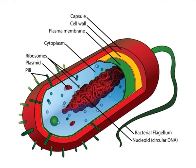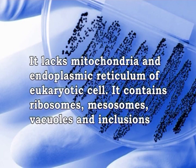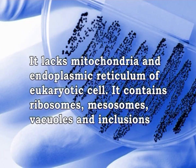The bacterial cytoplasm is a colloidal system containing a variety of organic and inorganic solutes in a viscous watery solution. It lacks mitochondria and endoplasmic reticulum of eukaryotic cells. It contains ribosomes, mesosomes, vacuoles and inclusions. Ribosomes are the centers of protein synthesis and are composed of RNA and proteins. Intracytoplasmic inclusions are sources of stored energy, present in some species. Mesosomes are vesicular, multilaminated or convoluted structures formed as invaginations of the plasma membrane into the cytoplasm, and are the principal centers of respiratory enzymes, analogous to the mitochondria of eukaryotes.